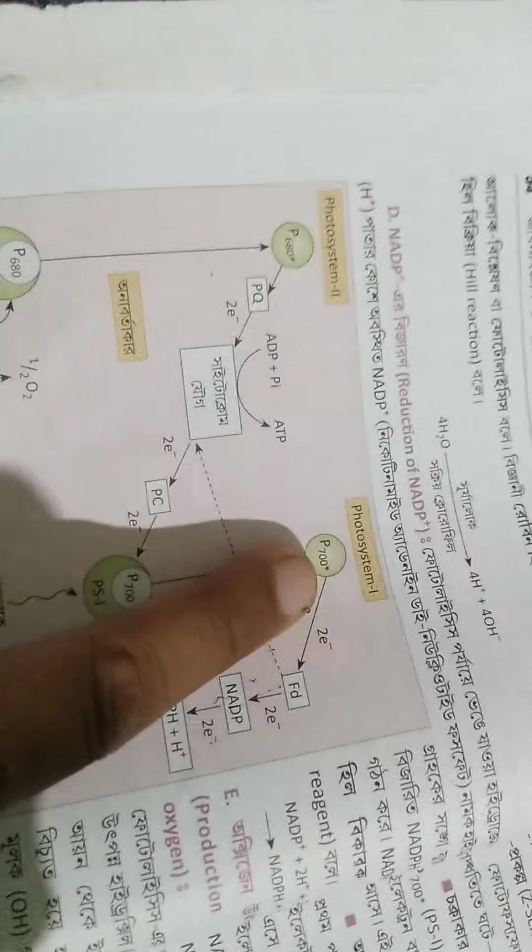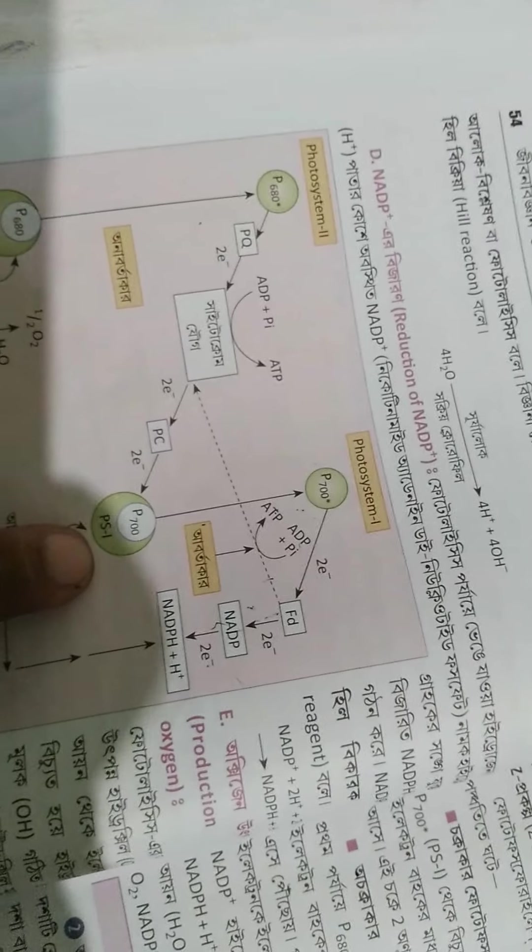The first photophosphorylation is P700, and P700 is the P700 reaction center. P1 is the electron. What is the P700 reaction? P700 is the ferredoxin. This is the cyclic photophosphorylation.